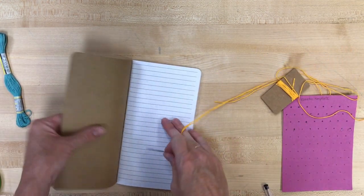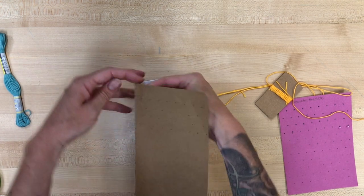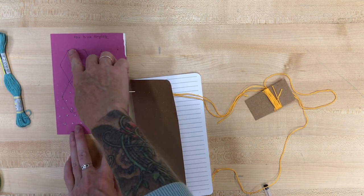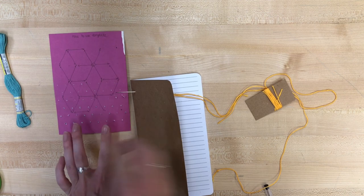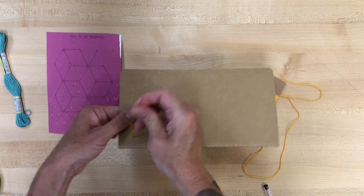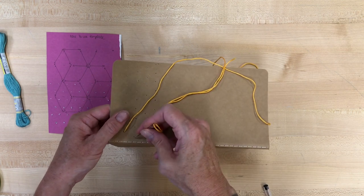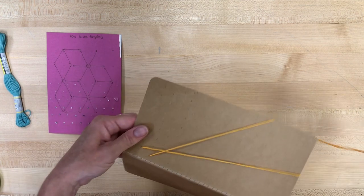You're going to open your cover and coming from the back to the front, pick a hole closest to either edge. I'm going to follow this template pretty closely. So I'm going to start in the top right, and I'll use the top right hole of my notebook. And you can kind of see that diamond pattern starts with just a zigzag down the side. So that's what we'll do first.